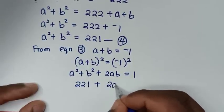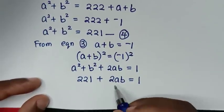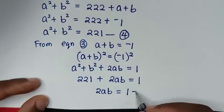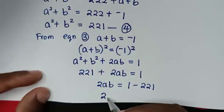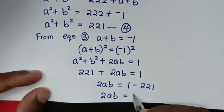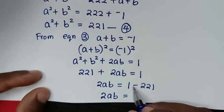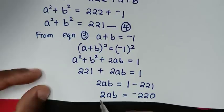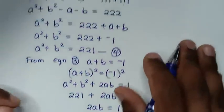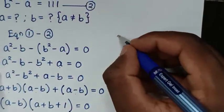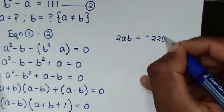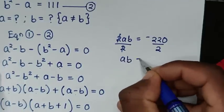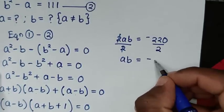We have 221 plus 2ab equals 1. Moving 221 to the right side gives 2ab equals 1 minus 221, which is negative 220. Dividing both sides by 2 gives ab equals negative 110.